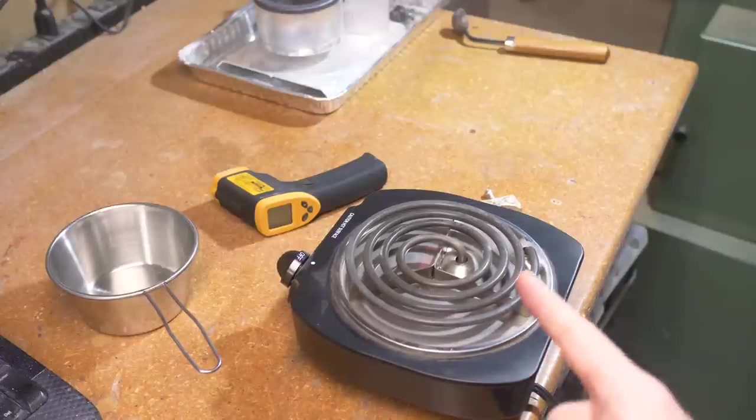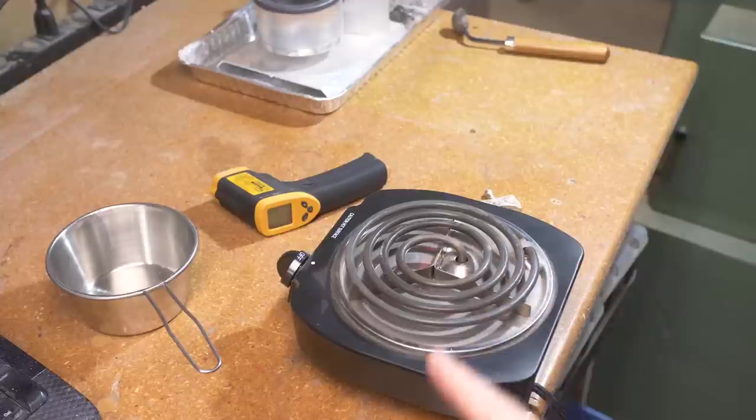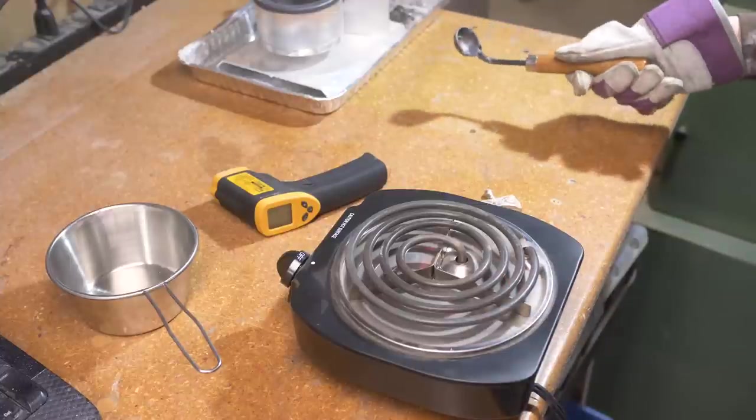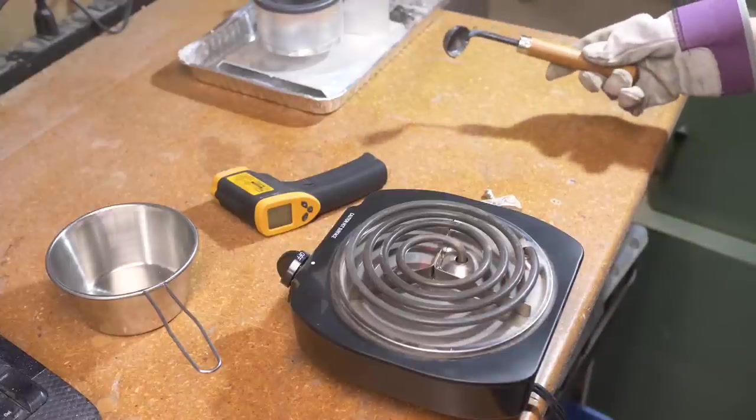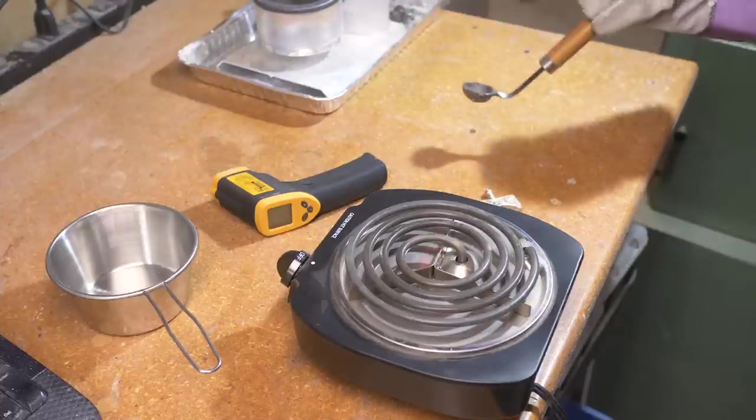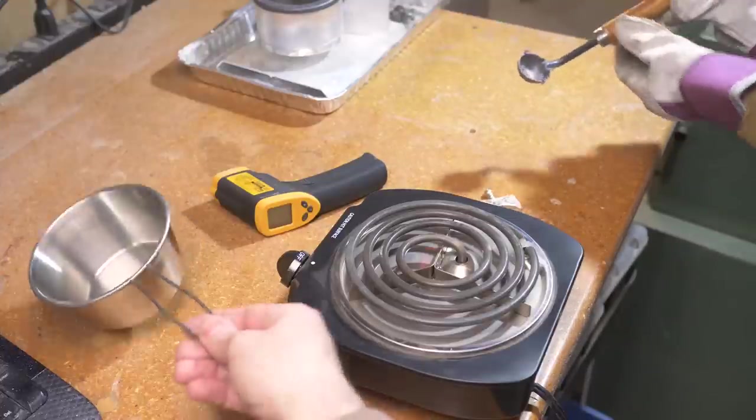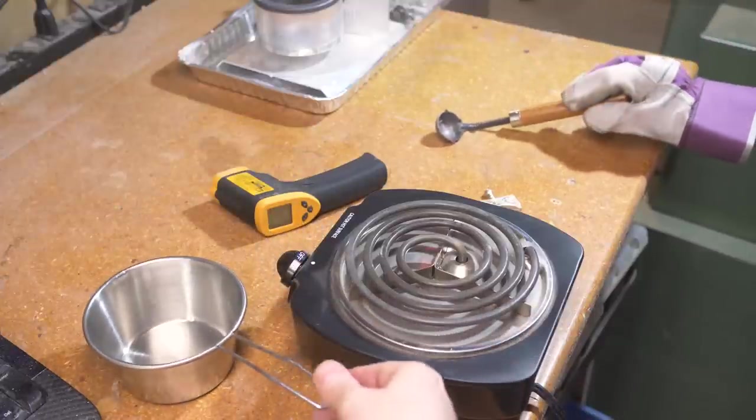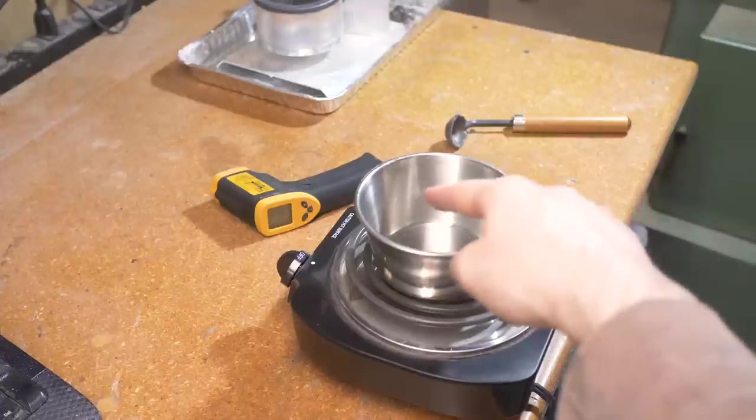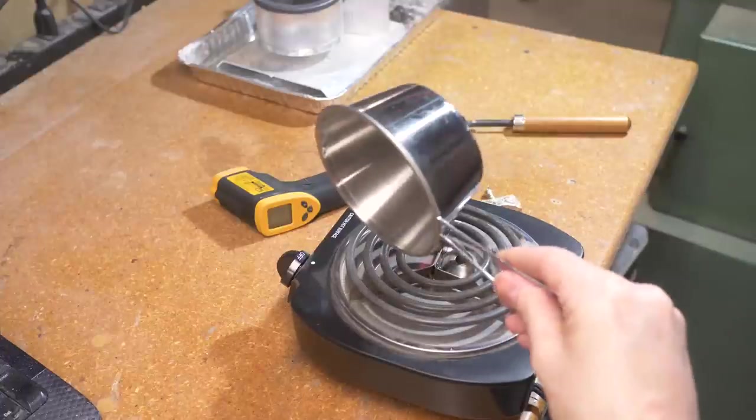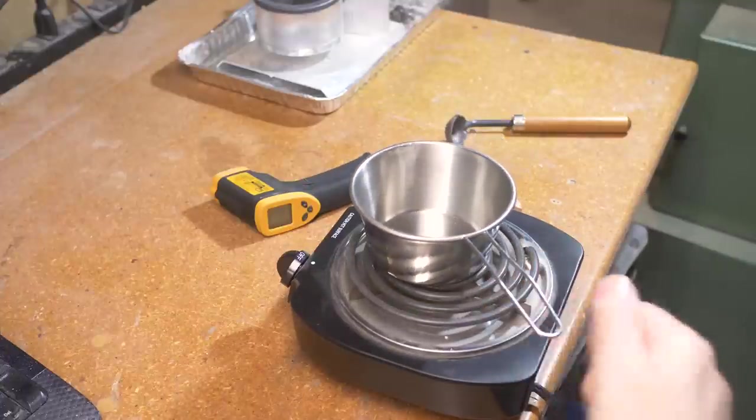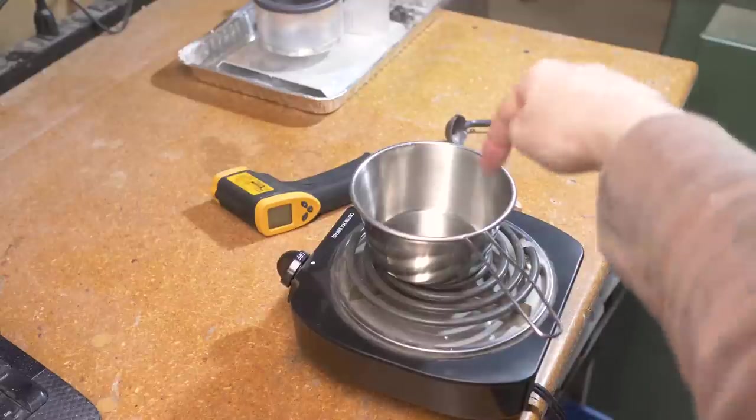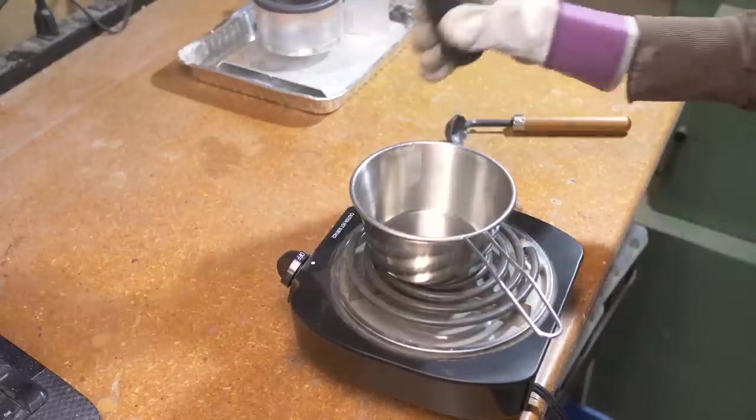We're also trying some different things with the pewter. Our little ladle is I think too small. It doesn't hold a lot of material. So instead we went and got this from the thrift store. We're going to modify it, put a little pouring spout on it, and then melt the pewter directly in there and pour it from that into our mold.